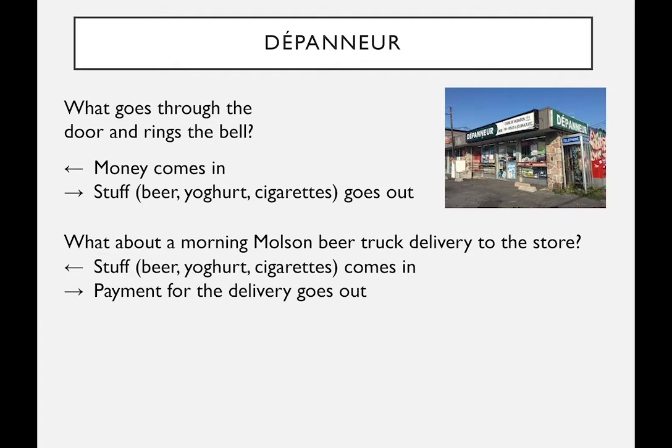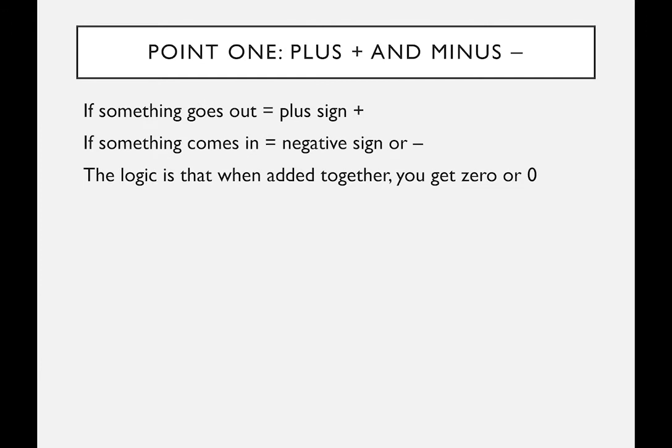What happens if somebody steals something — they walk out without paying? Accountants like double-entry bookkeeping so much that even in the case of theft, they still record it twice. Even though there's no second real transaction, they have a special account for it called theft, wastage, or loss.